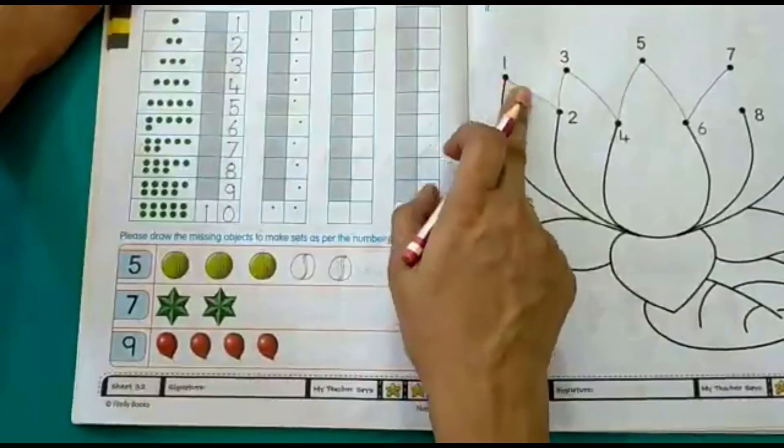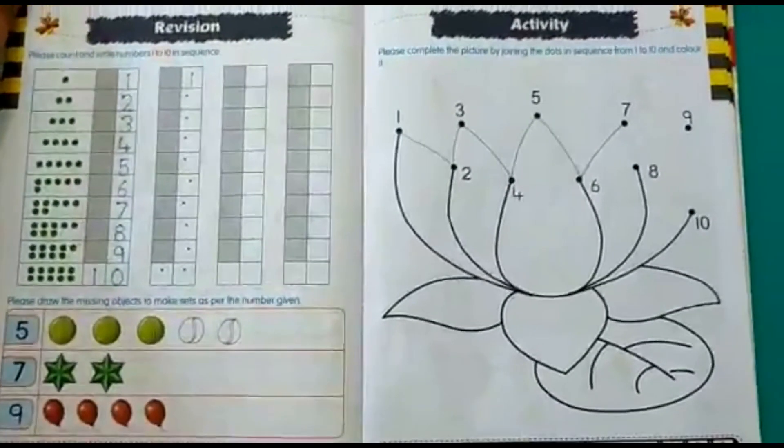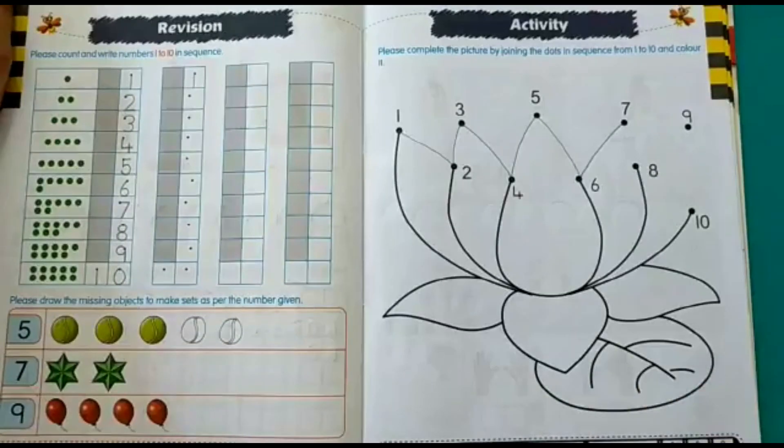Wherein you will also learn the numbers 1 to 10 in the correct sequence. This is on page number 33 of your maths worksheet. Thank you children. Thank you.